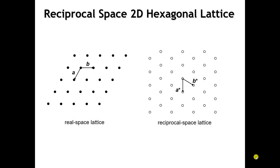The reciprocal space lattice vectors make an angle of 60 degrees with respect to one another. If we draw the entire lattice of reciprocal space points, it still has hexagonal symmetry, but the lattice vectors are now pointing in somewhat different directions. The first Brillouin zone is the locus of points closest to the lattice point at the origin. Drawing lines from the origin to all nearest points and bisecting them, we get a hexagon.